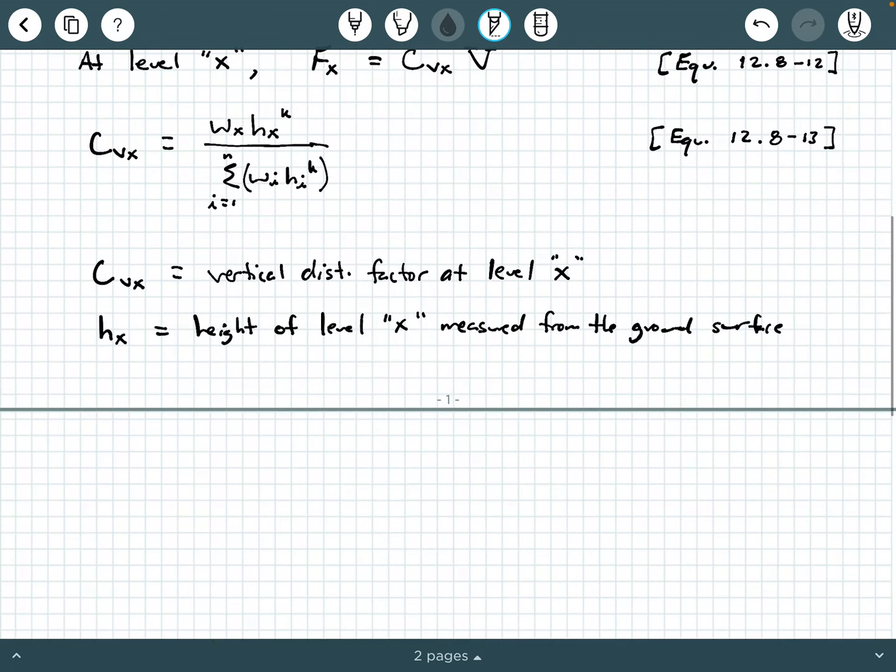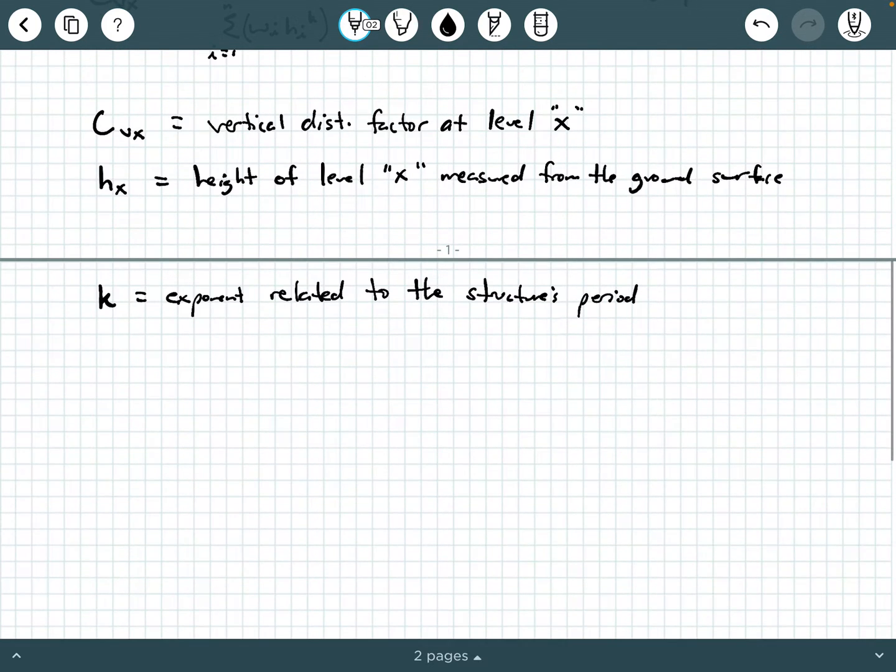Now what about K? K is an exponent related to the structure's period. The code tells us that for structures that have a period of 0.5 seconds or less, so if you have 0 to T up to 0.5 seconds, then K is equal to 1. Now for structures that have a period of 2.5 seconds or more, so T is greater than or equal to 2.5 seconds, then K is equal to 2.